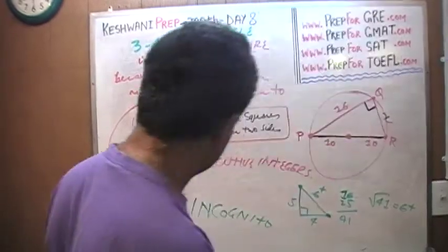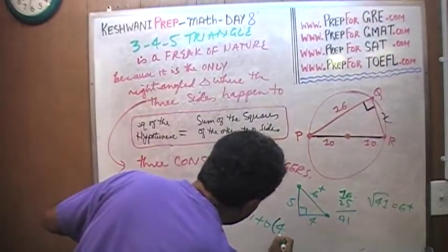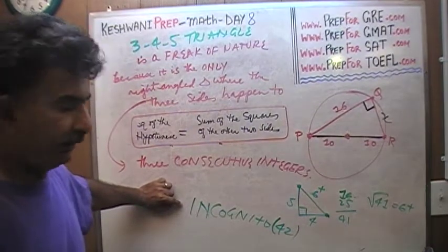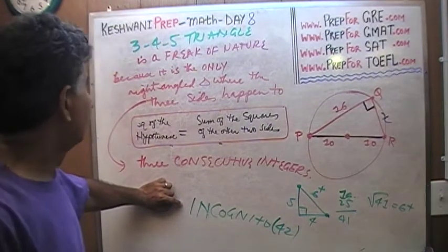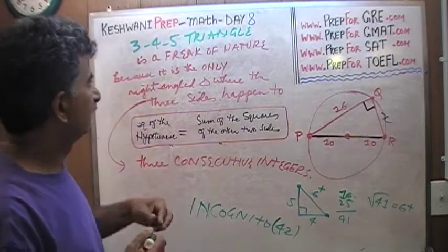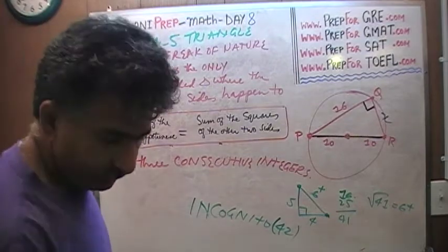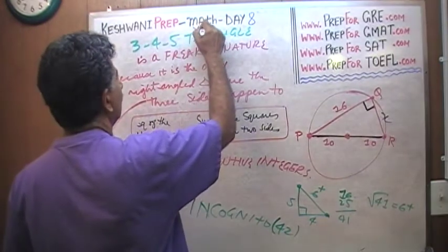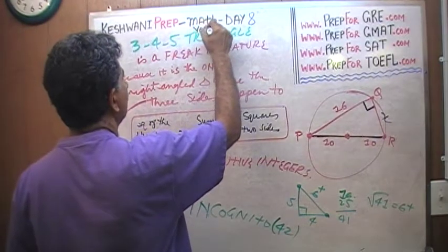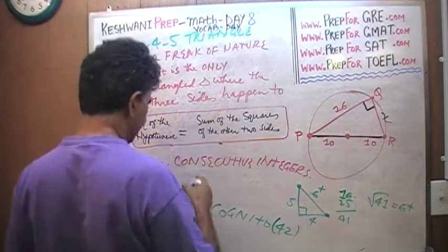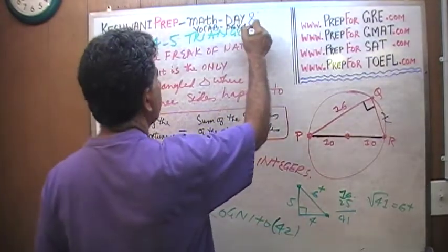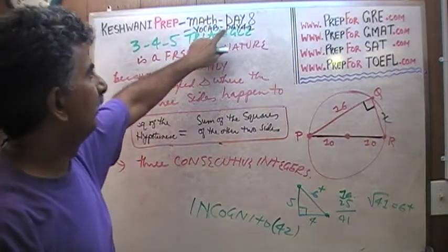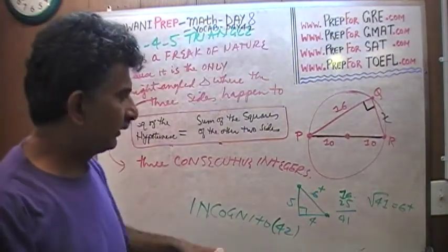That's day number 42. If you want to learn 'incognito' properly and related words about cognition, just type in 'Keshwani Prep dash vocab dash day 42' and it will pop right up.